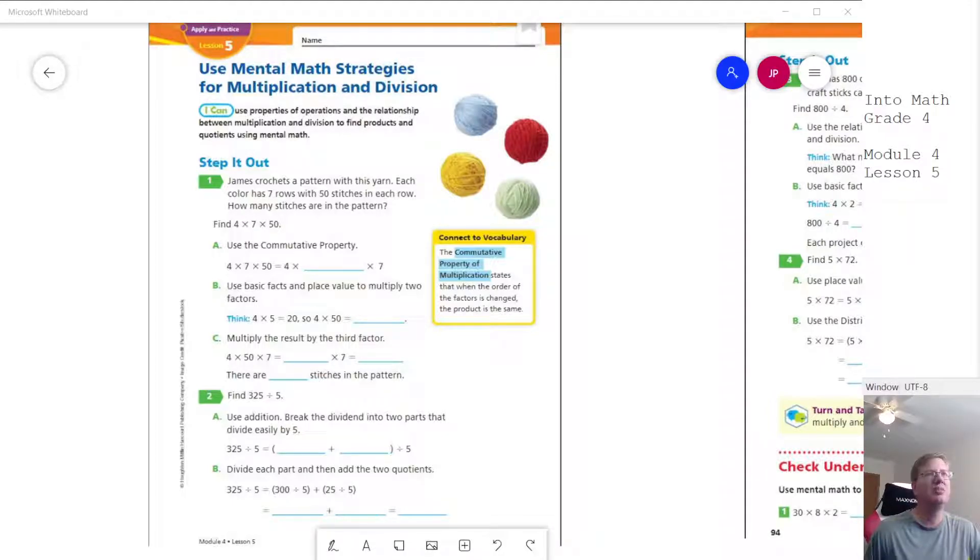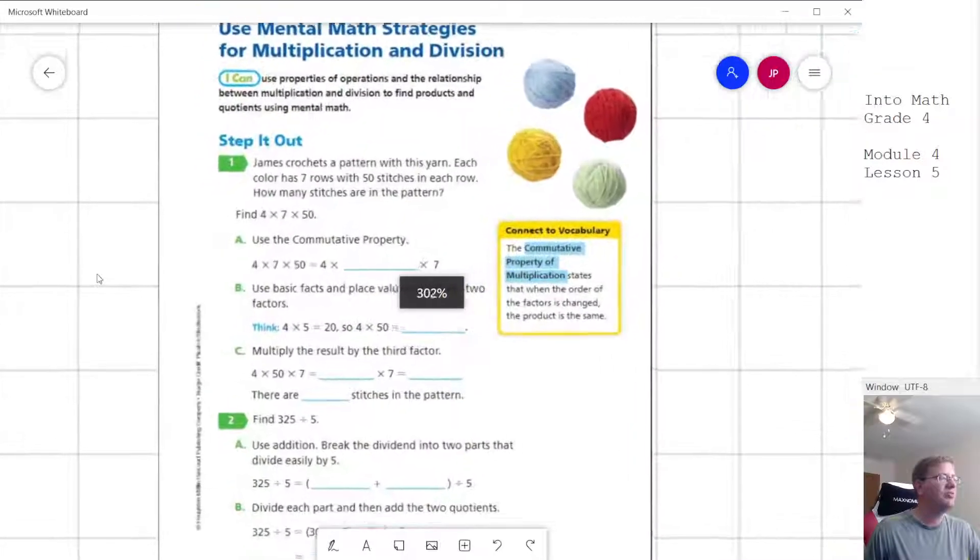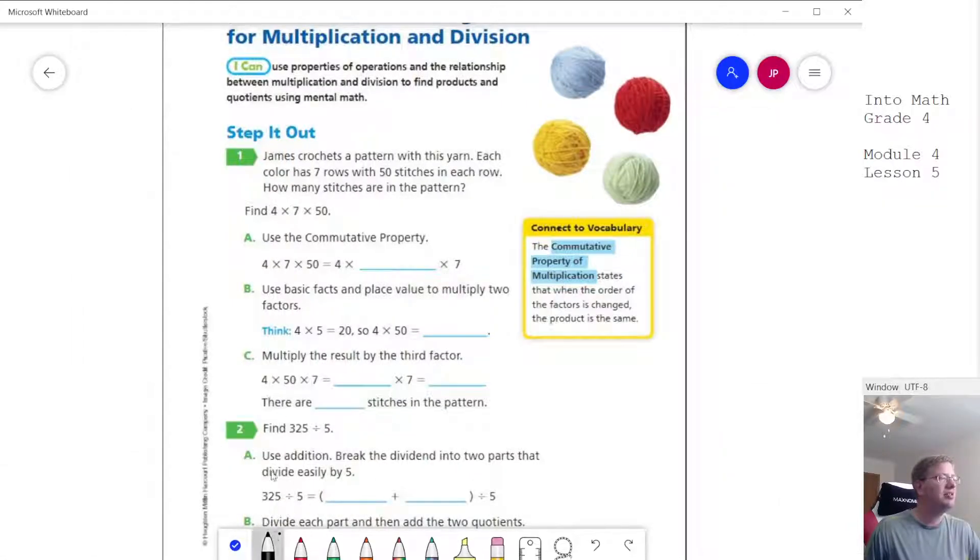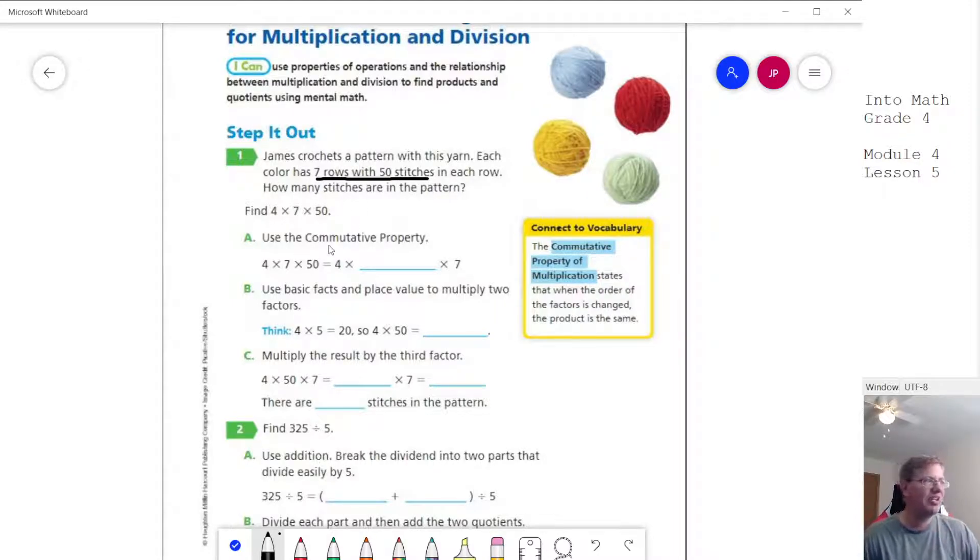So in this lesson, we are going to be doing the same thing, but the goal is to try to do as much of this as we can without having to write anything down. For instance, for number one, we are going to underline our parts that we're working with. We need seven rows with 50 stitches in each row, and then we want to find the answer.